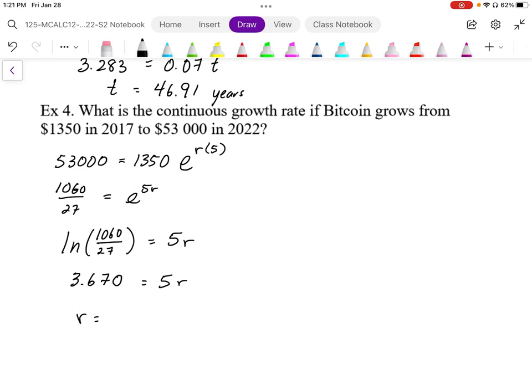The continuous growth rate for Bitcoin ends up being about 73.4%, which is a very large growth rate for an investment. So I'll see you in the next one.